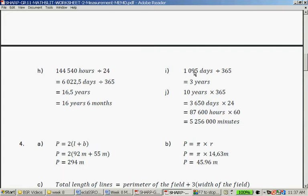1,095 days divided by 365 is 3 years. And 10 years times 365 is 3,650 days times 24 is 87,600 hours times that by 60, I get 5,256,000 minutes.